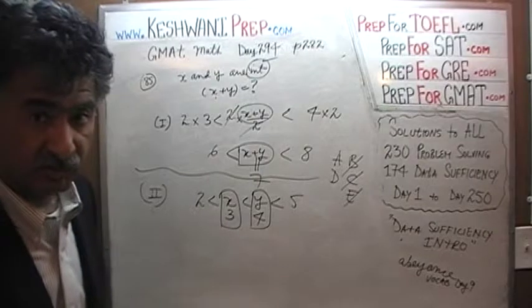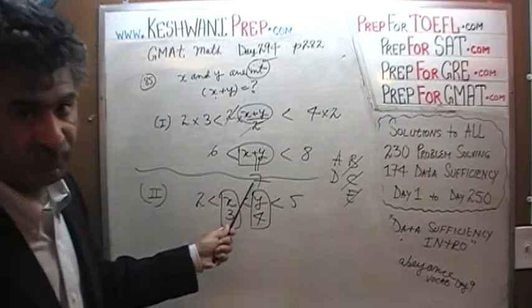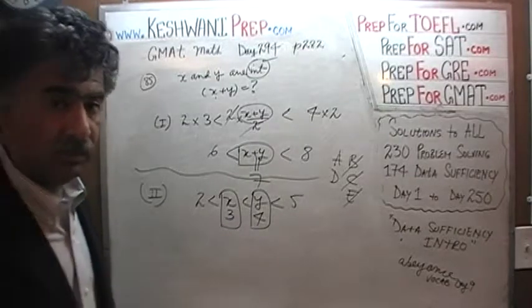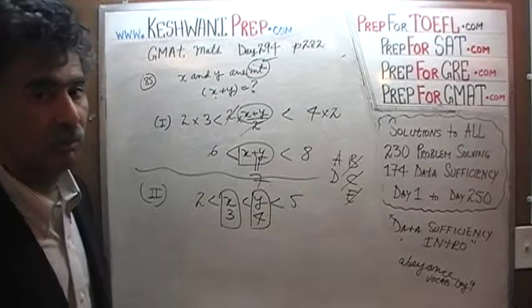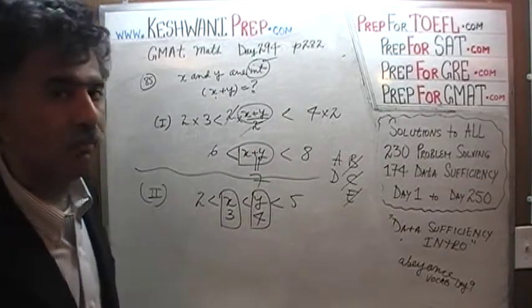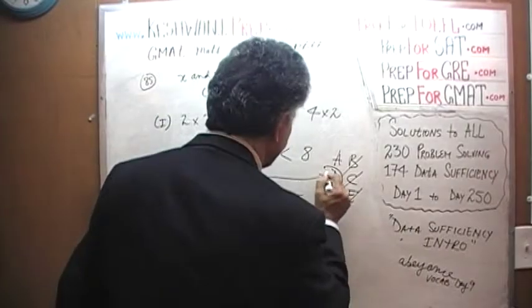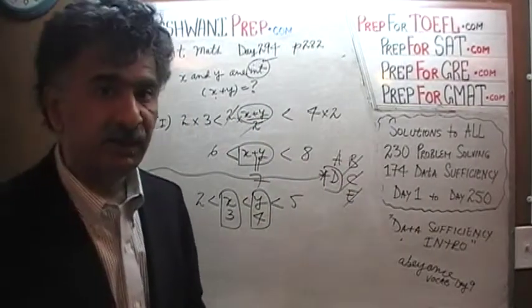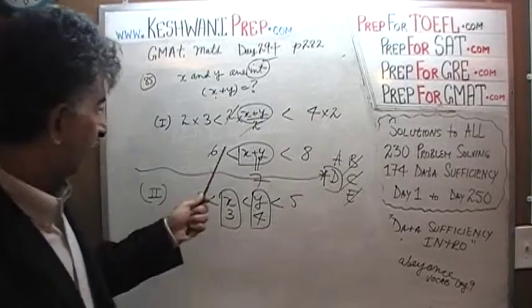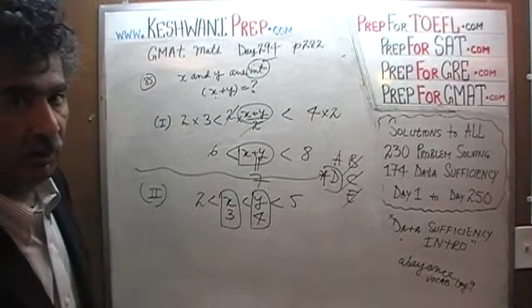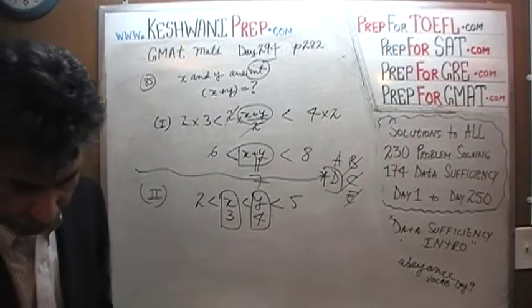The second statement is actually stronger than the first statement because in the first statement we were unable to tell individually what X and Y were, but we were able to tell that their sum has to be 7. This second statement is even stronger — not only are we able to tell what the sum is (clearly 7), but we are actually able to tell the individual values. The second statement by itself is more than sufficient. The answer is D. Let's move on to number 86.